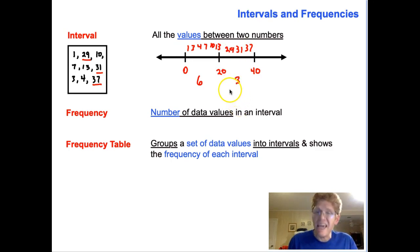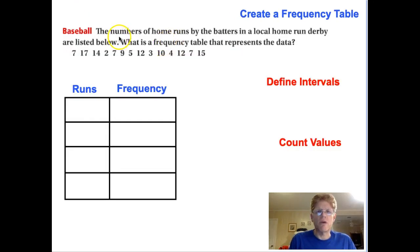Now a frequency table is when we take the number of values and we organize them by their interval. Let's see what that looks like. The numbers of home runs by the batters in a local home run derby are listed below. What is a frequency table that represents the data?